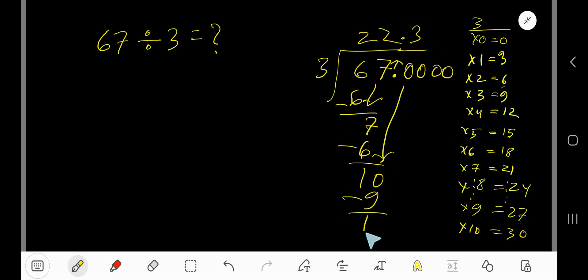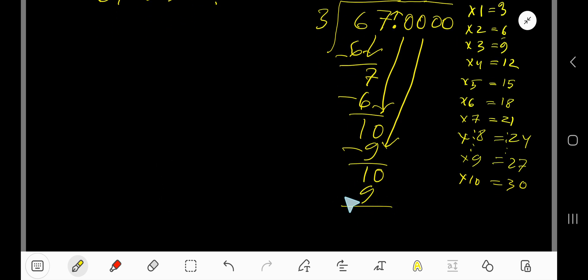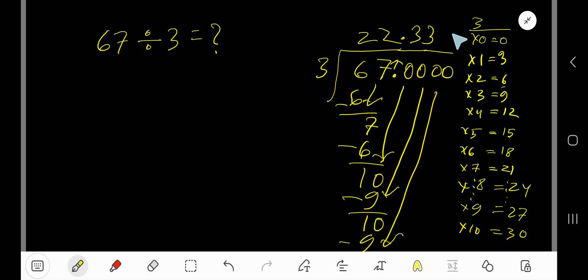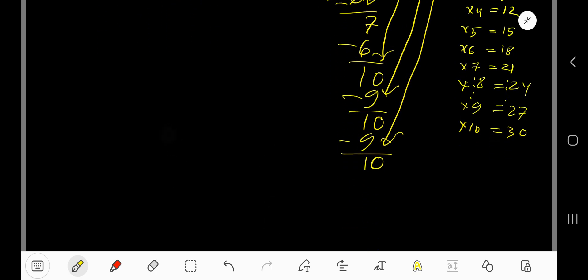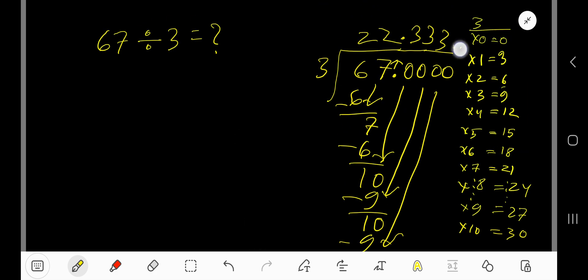Bring down another 0. 3 goes into 10 how many times? 3 times. 3 times 3 is 9. Subtract 1. Bring down another 0. 3 goes into 10, 3 times. 3 times 3 is 9. Subtract 1. Bring down another 0. 3 goes into this 10 again, 3 times. 3 times 3 is 9. Subtract 1.